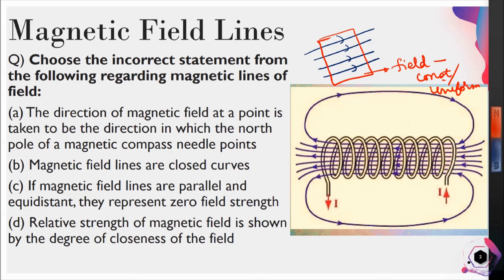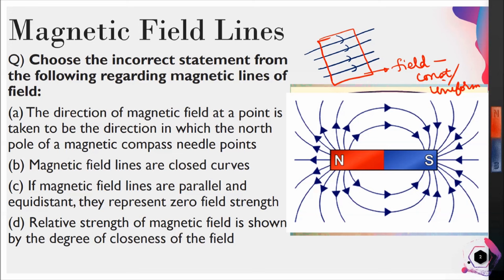Field lines represent both direction and magnitude. For Option D — relative strength of magnetic field is shown by the degree of closeness of the field lines — let's look at a picture of a bar magnet with field lines going from north pole to south pole. Three equal areas are marked: area one farther from the poles, area two closer, and area three near the south pole.